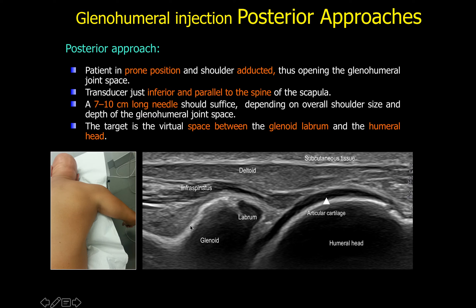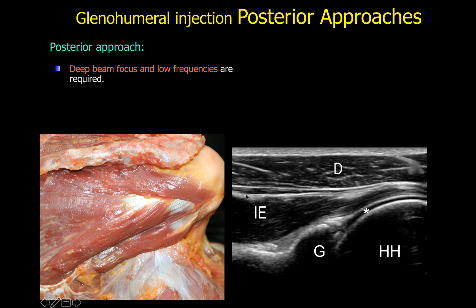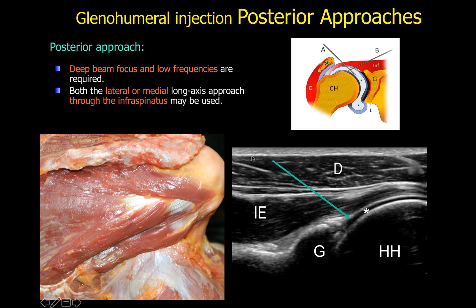For the posterior approach, the target is the virtual space between the glenoid labrum and the humeral head. The needle passes through the deltoid and infraspinatus, targeting the posterior scapula and labrum. Both a medial portal and a lateral portal can be used, both aimed at the space between the labrum and the humeral head.